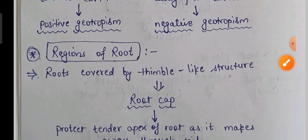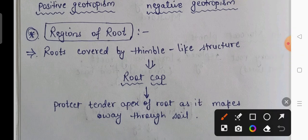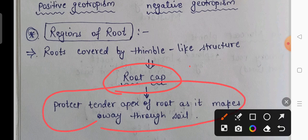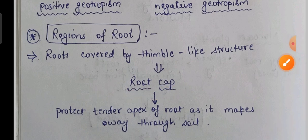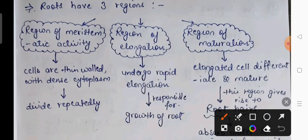The next topic is the regions of a root. There are three main regions: first is the region of meristematic activity, second is the region of elongation, and third is the region of maturation.